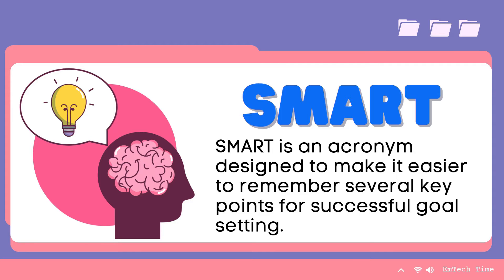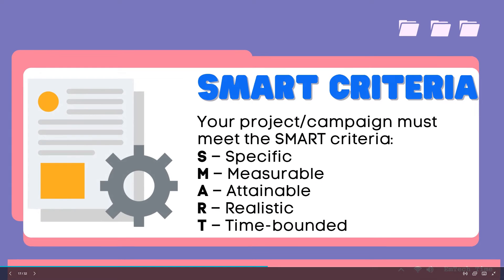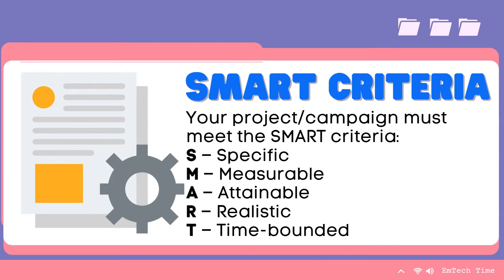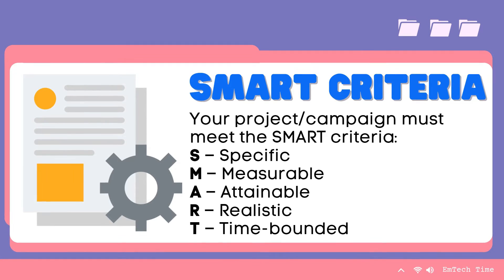Each letter represents a separate point and has a question to clarify outcomes. Your project or campaign must meet the SMART criteria. First, we have S for Specific: What do you want? What is your goal? What is your first step? What specifically will you achieve?